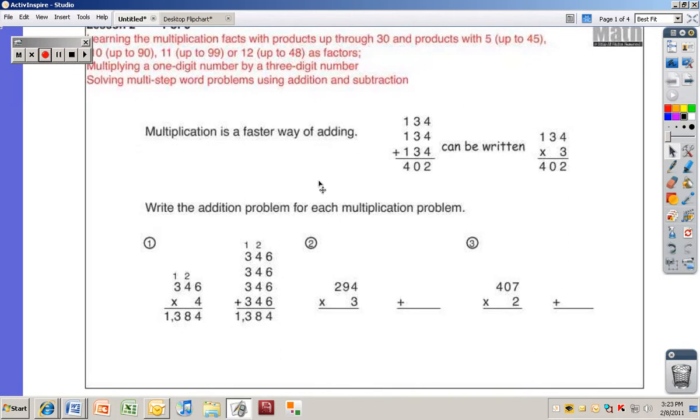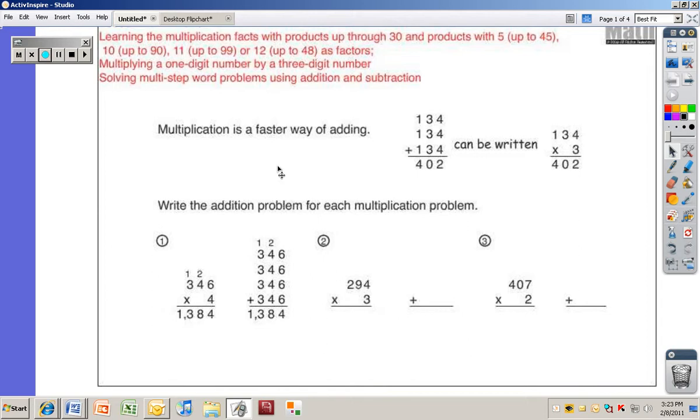Learning the multiplication facts with products up through 30, that means answers, products up through 30, and products with 5 up to 45, and also 10 up to 90, 11 up to 99, 12 up to 88 as factors.